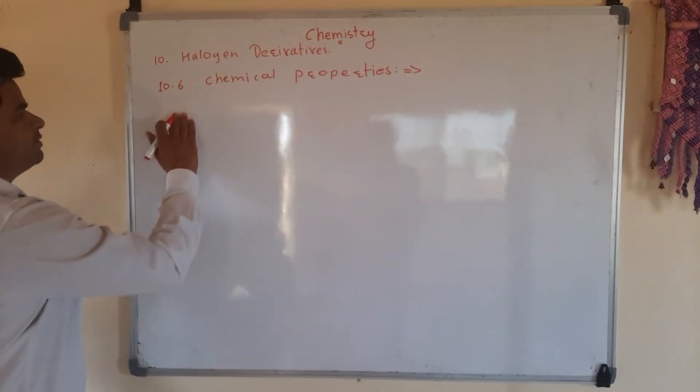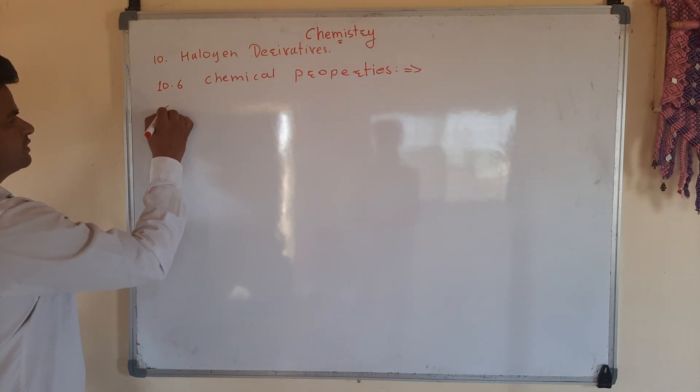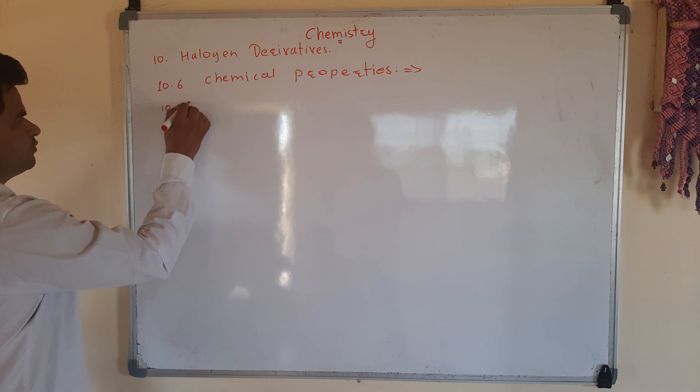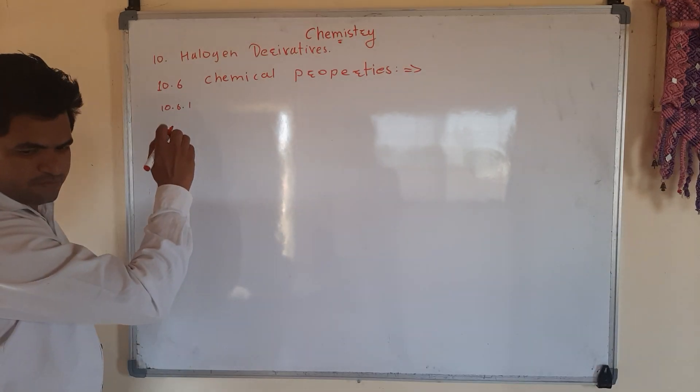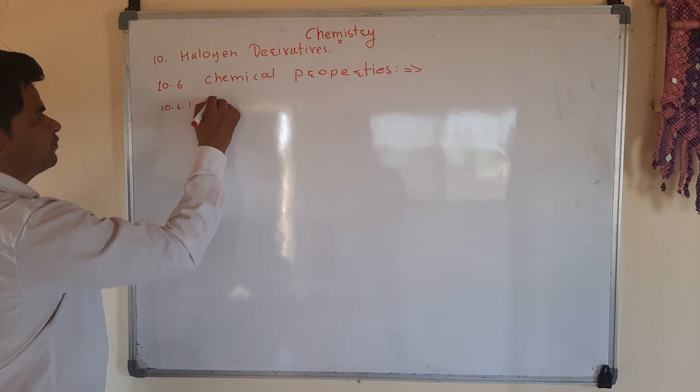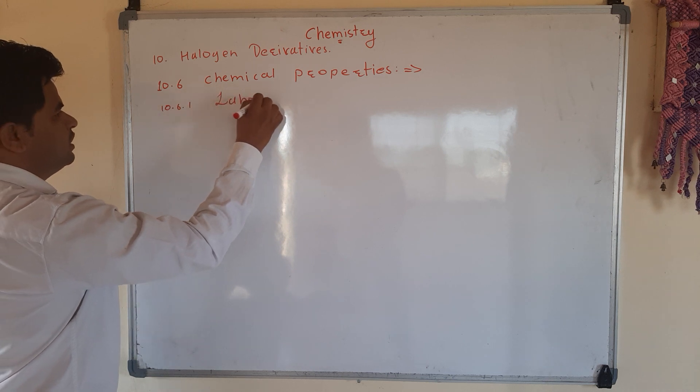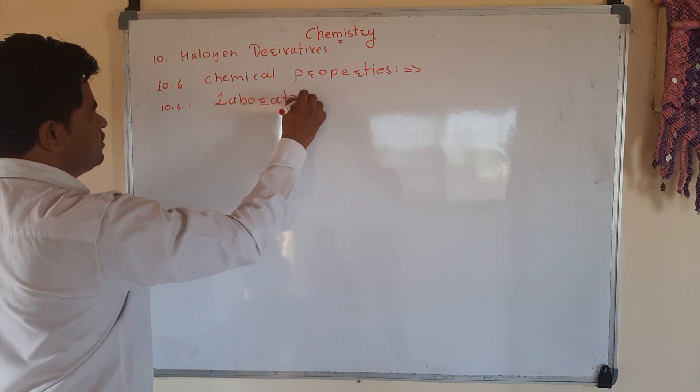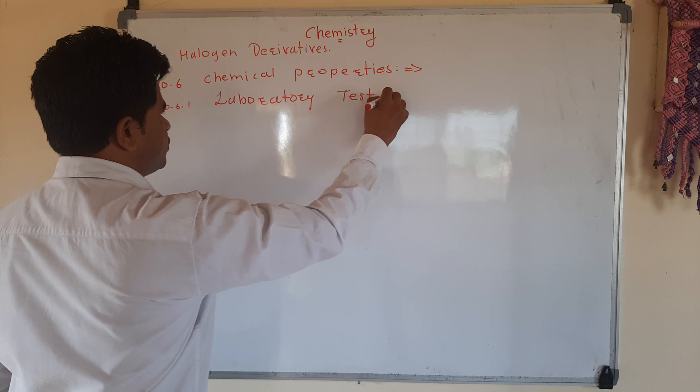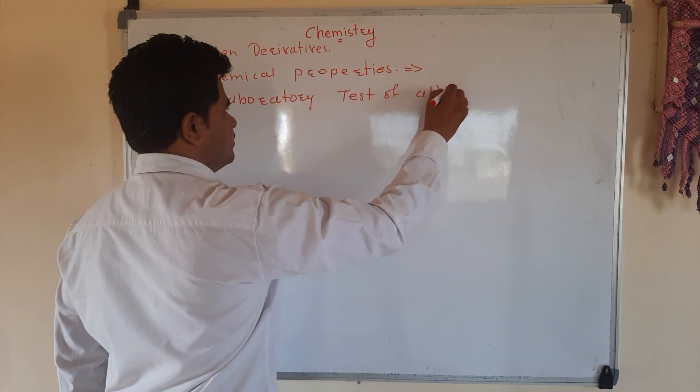Let me start now. Chemical property with the first point. That is 10.6.1 Laboratory test of alkyl halide.